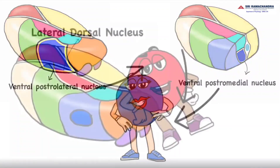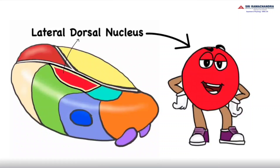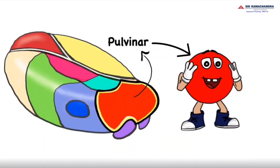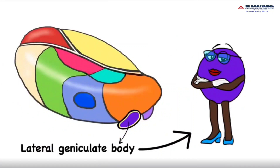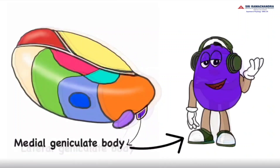The dorsal lateral nuclei receive afferents from the parietal lobe and give efferents to the parietal lobe. Pulvinar nuclei receive afferents from the parietal, temporal, and occipital lobes and give efferents to those same lobes. The lateral geniculate bodies receive afferents from the optic tract and give efferents to the visual cortex. The medial geniculate bodies receive afferents from the cochlea and inferior colliculi and give efferents to the auditory cortex.